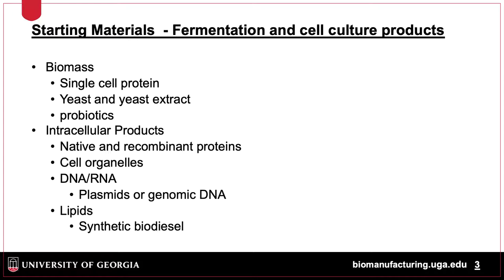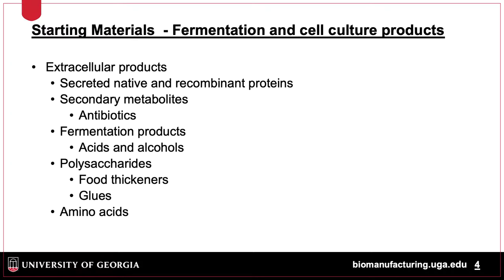Material can also come from inside the cells, such as recombinant proteins, cell organelles such as the nucleus, DNA, and lipids such as fuels. Extracellular products could include secreted proteins, antibiotics, other chemicals such as acids, alcohols, polysaccharides, and amino acids.